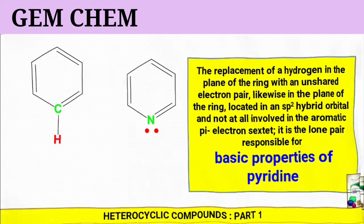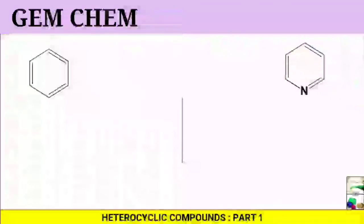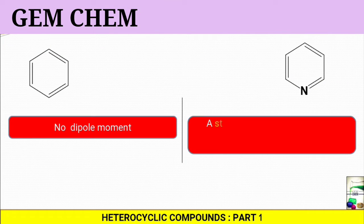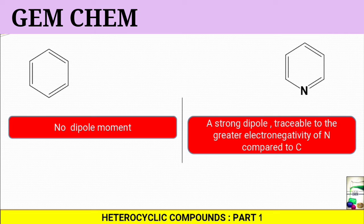If we see the last point of difference: in case of benzene there is no dipole moment, whereas in case of pyridine there is a strong dipole moment traceable to the greater electronegativity of nitrogen compared to carbon.